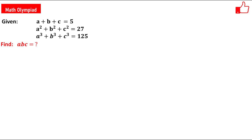Hello friends. In this problem we have been given three equations which has three unknowns, and you have to find the product of these unknowns. The first equation is a plus b plus c equals 5. The second equation is a squared plus b squared plus c squared equals 27. And the third equation is a cubed plus b cubed plus c cubed equals 125. You have to find the value of a times b times c.